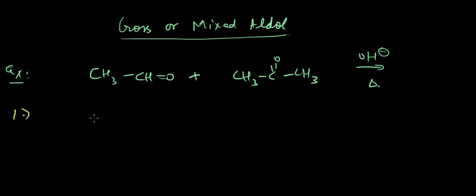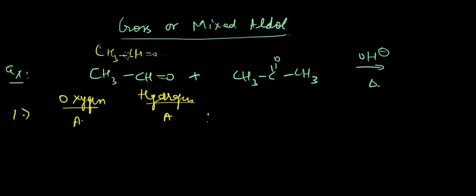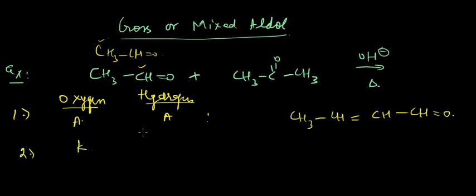First, we can form the compound where oxygen comes from the aldehyde group and hydrogen also comes from the aldehyde group. In this case, the product formed would be something like CH3-CH=CH-CHO — the aldehyde self-condensation product after dehydration.